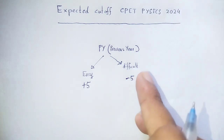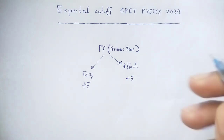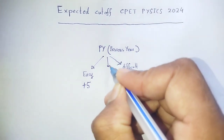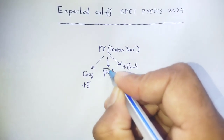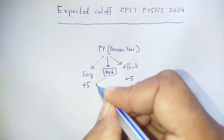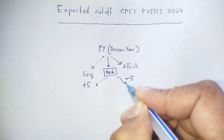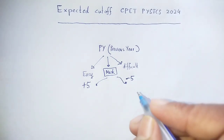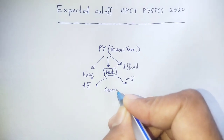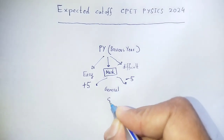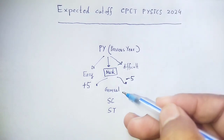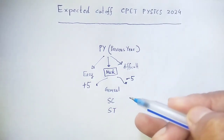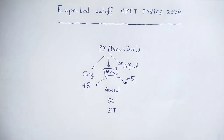This is for marks: plus 5 or minus 5, applied category wise — General, SC, ST. For the General category, whatever marks were there previously, add or subtract 5 accordingly. Apply the same rule category wise for SC and ST as well.